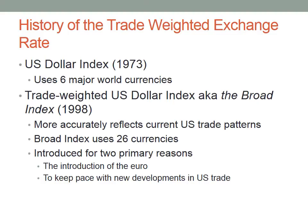First, we are going to talk about the history of the trade-weighted exchange rate. In 1973, it was called the U.S. dollar index, and it used six major world currencies, which included the euro, the Japanese yen, the Canadian dollar, the British pound, the Swedish krona, and the Swiss franc.